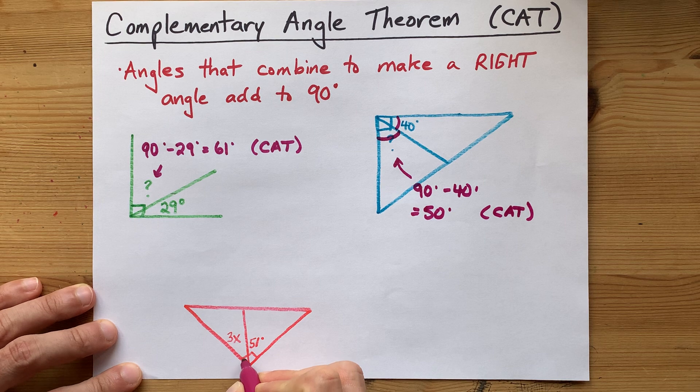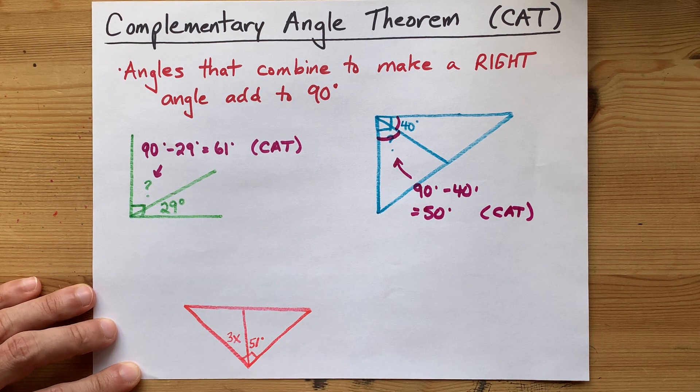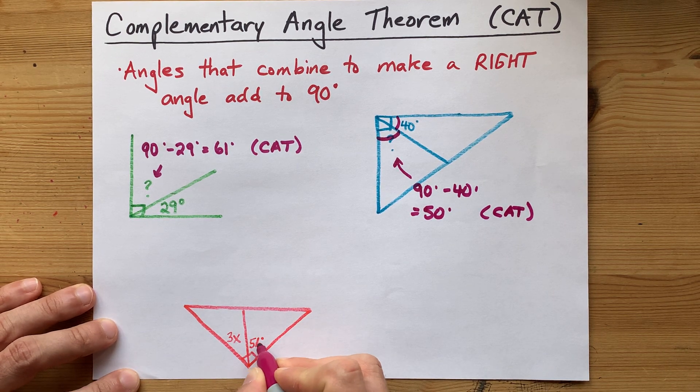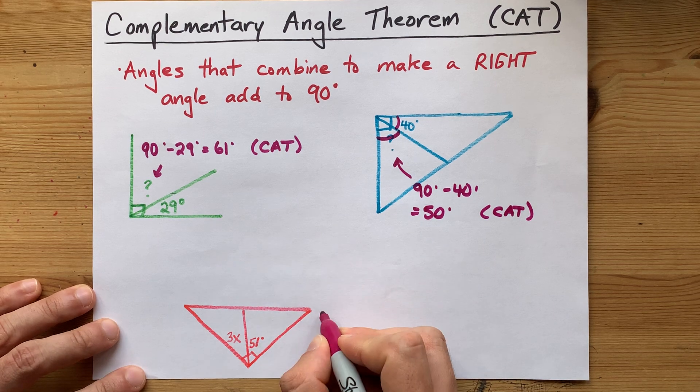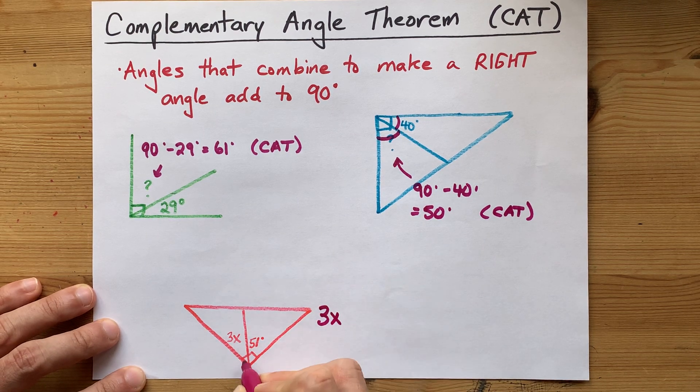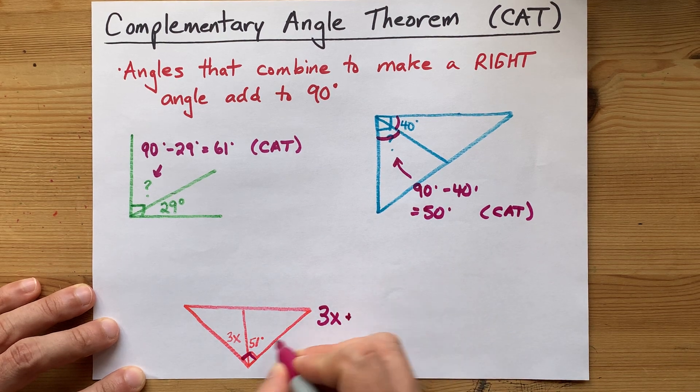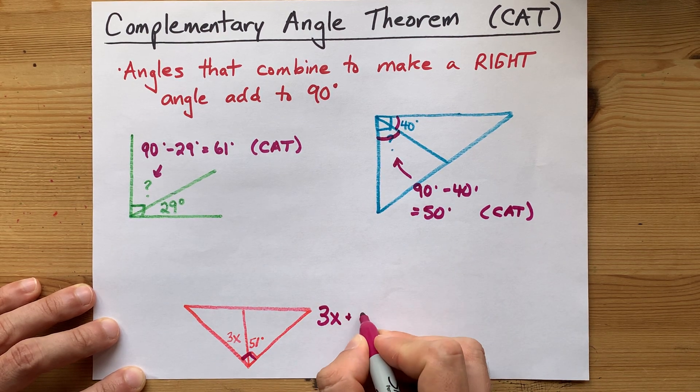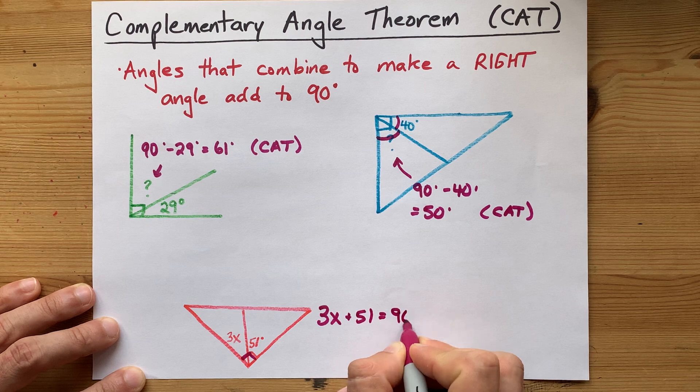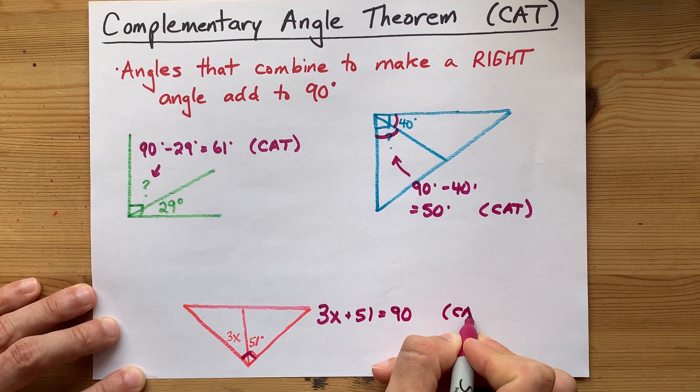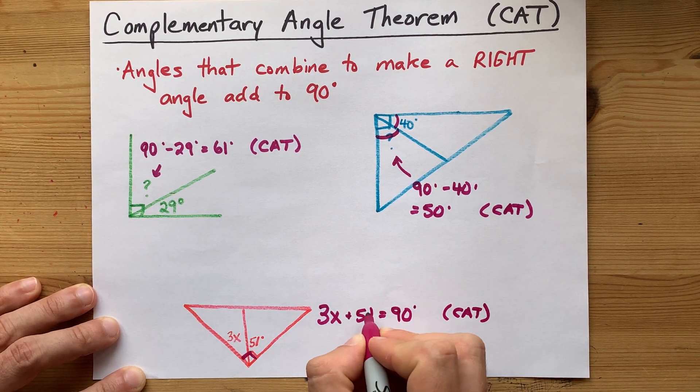Lastly, I have an angle here labeled with 3x, and then the other angle is labeled with 51. So those two angles, which combine to make a 90 degree angle there. That 3x plus that 51 have to combine to make 90. That's where I'm using the complementary angle theorem.